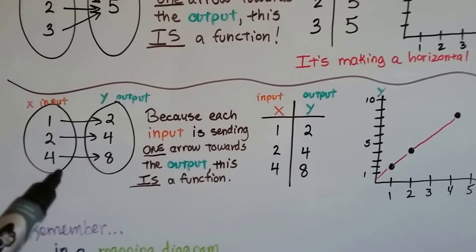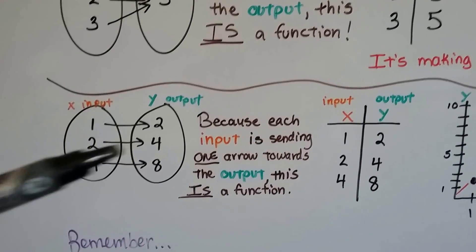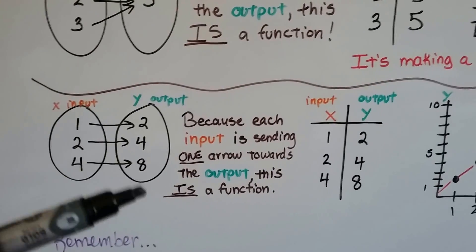Let's look at this one. This is the same as this one. So because each input is sending one arrow across towards the output, this is a function.